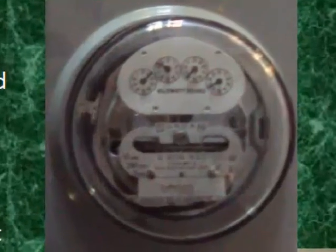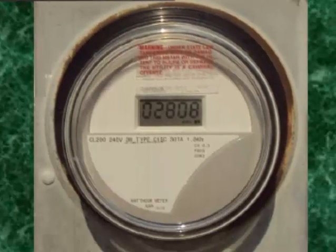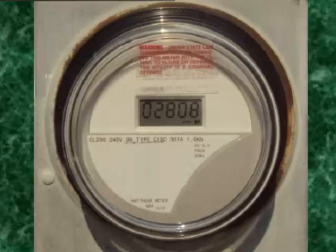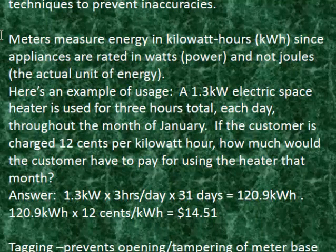Meters. The older types used electromechanical induction, and they had problems with noise in the power lines. Readers also had to get out of their vehicles and carefully observe the dials. With the newer types, they are electronic and wirelessly transmit usage data to computers within the meter reader's vehicle. They also use modern measurement techniques to prevent inaccuracies, so the meter reader can just drive around and pick up all the usage data. Meters measure energy in kilowatt hours, since appliances are rated in watts and not joules, which is the actual unit of energy.